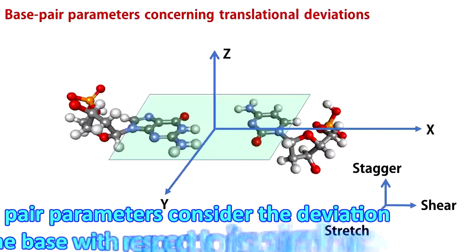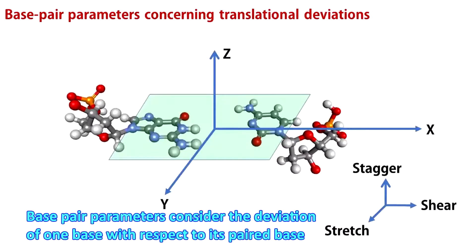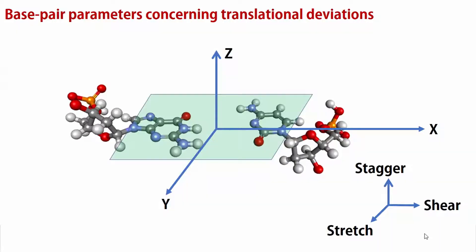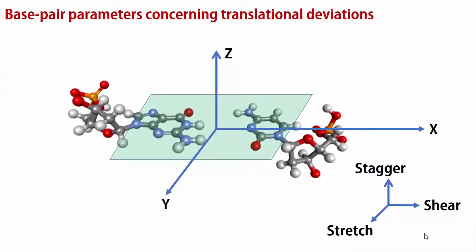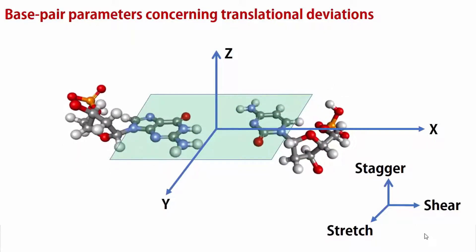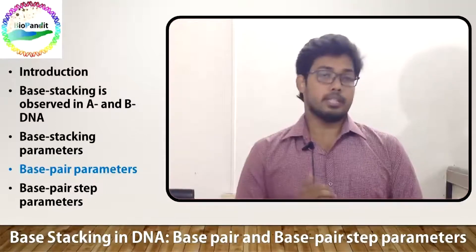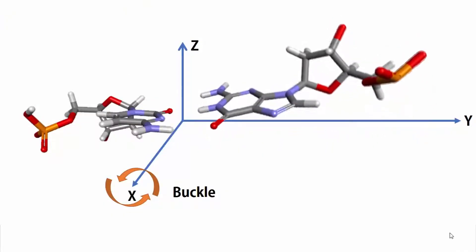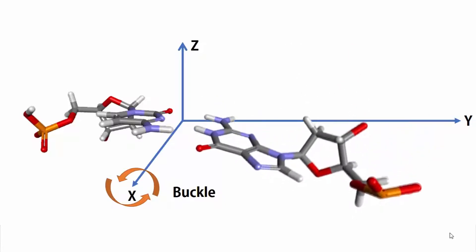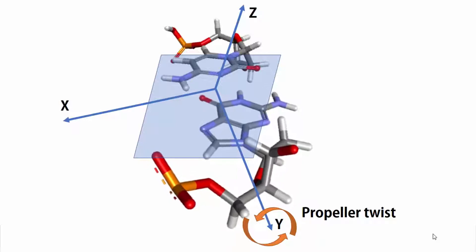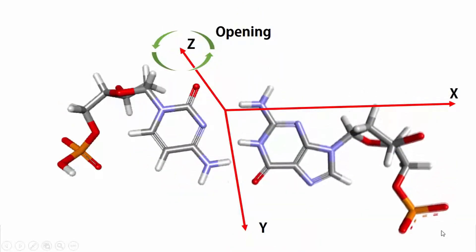In base pair parameters, deviation of one base with respect to its pair base is considered. Here are the three base pair parameters that consider translational deviations, and here are the three that consider rotational deviations from ideal base pair geometry. The rotation along the x-axis is called buckle, the rotation along the y-axis is called propeller twist, and the rotation along the z-axis is called opening.